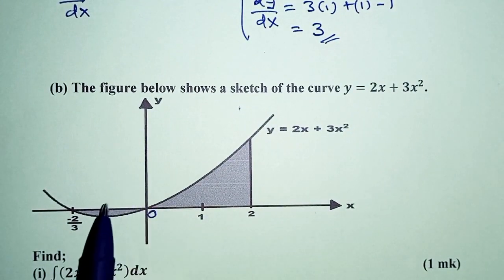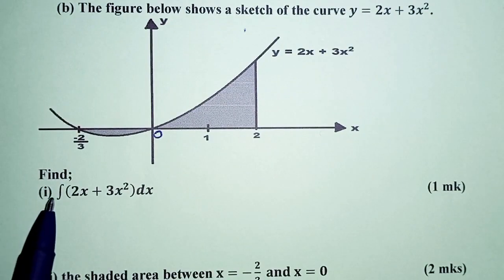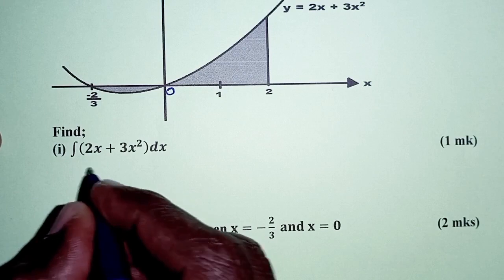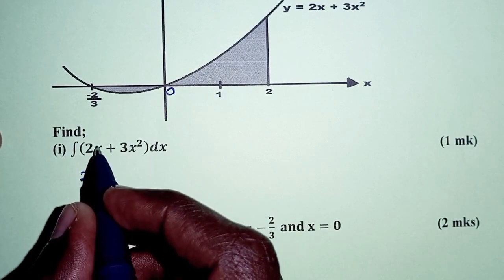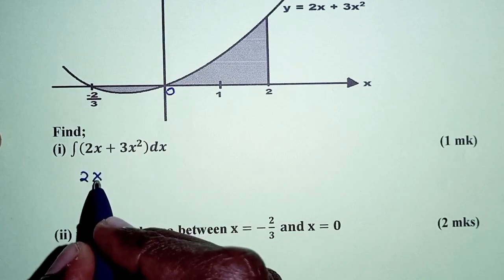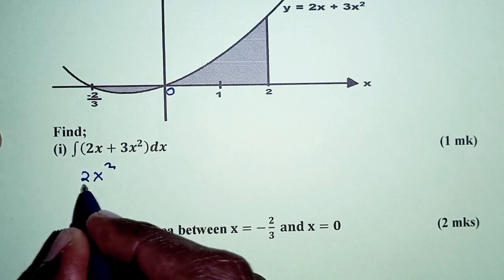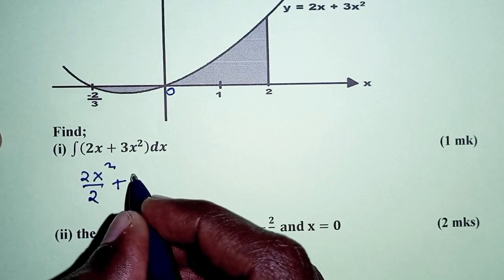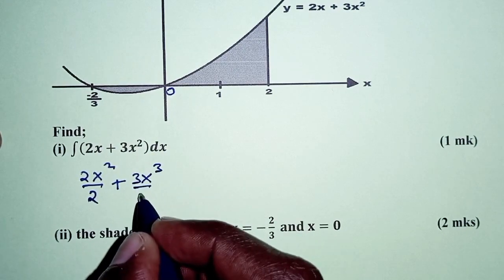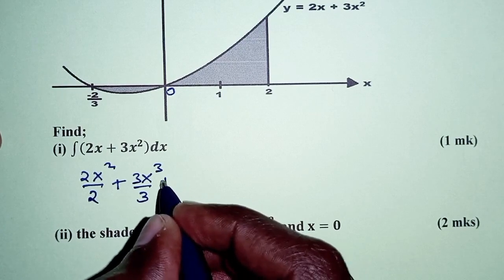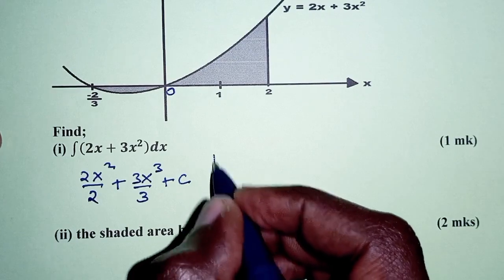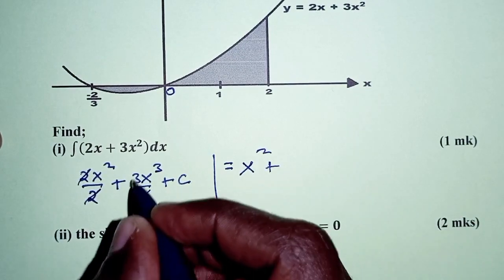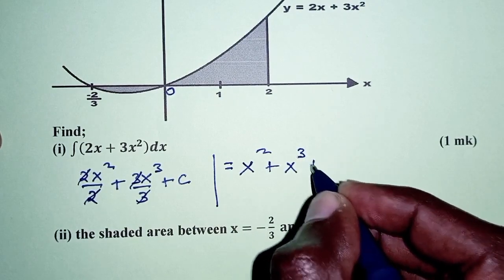For part B, we are given the diagram and asked to find the indefinite integral of 2x plus 3x squared with respect to x. For 2x, we increase the power by 1 to get 2x squared divided by 2. For 3x squared, we increase the power to get 3x cubed divided by 3. These simplify to x squared plus x cubed plus the constant c.